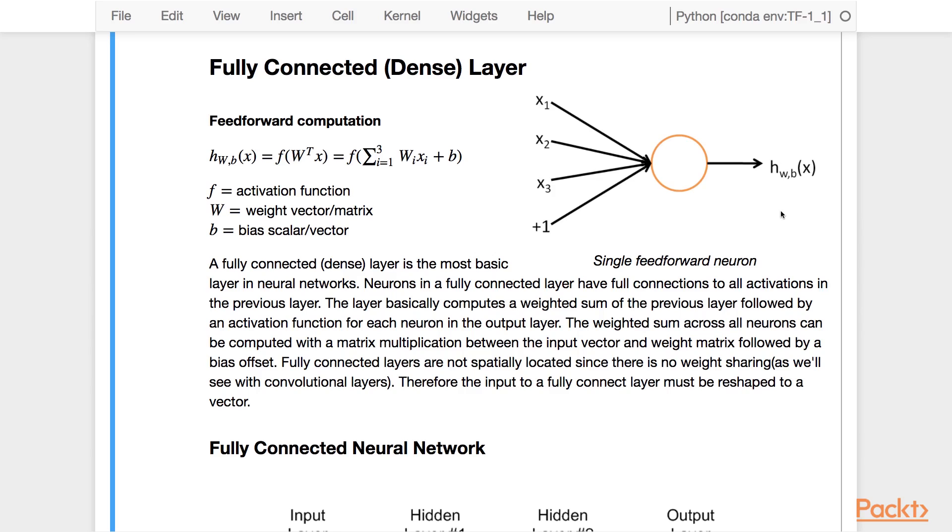Fully connected layers are not spatially located, since there is no weight sharing as we'll see later for convolutional layers. Therefore, the input to a fully connected layer must be reshaped to a vector.